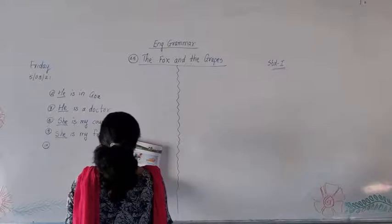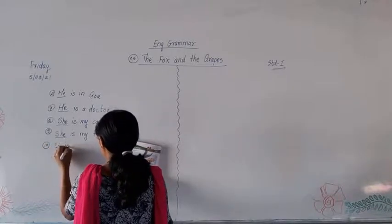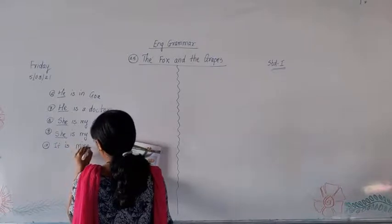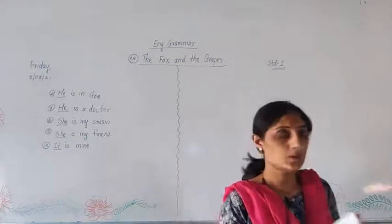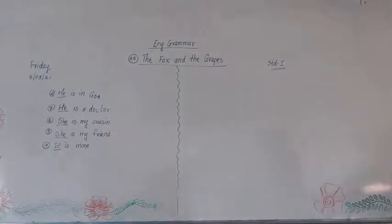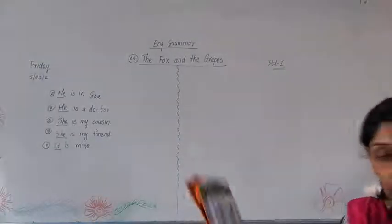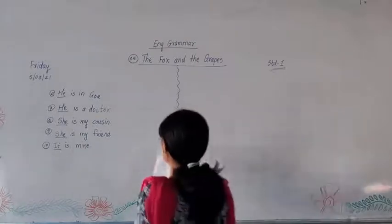And tenth one, the bicycle is mine. It is mine. So what will come here? It will come. It is mine. Understood? In this way, yesterday I told you to complete 6th, 7th, 8th, 9th and 10th sentences. Today, we are going to start with a new lesson.